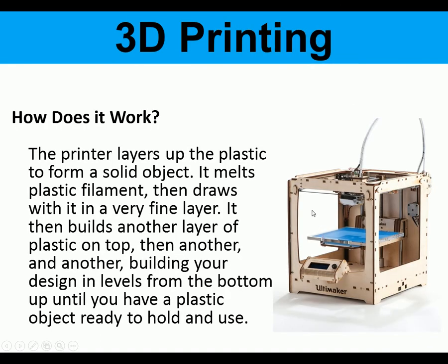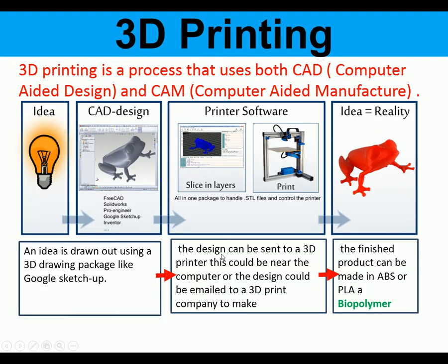3D printing is a plastic process that builds up layers of plastic. It melts a plastic filament and builds up layer by layer as the bed moves down. 3D printing uses CAD and CAM. If someone has an idea, they draw a CAD design using software. The printer software builds up the tool path or layers and the design is sent to a 3D printer. This could be near the printer or emailed to a 3D print company. The finished product can be made in ABS or PLA — PLA is a biopolymer.